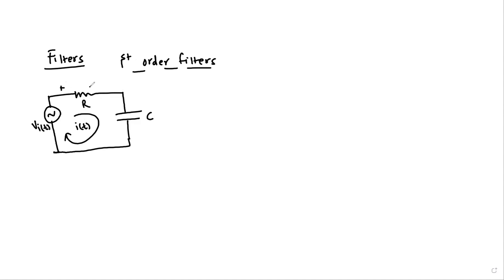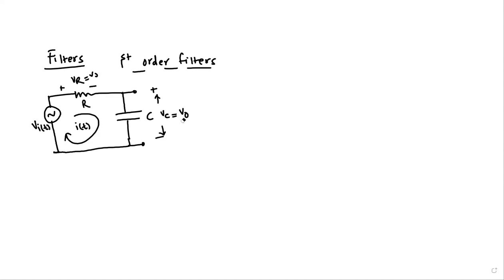The voltage that gets developed across the resistor is indicated by Vr. The voltage that gets developed across the capacitor is indicated by Vc, or the output voltage if we take the output across the capacitor. If we take the output voltage across the resistor, Vr will be Vout in that case. Right now, we are interested in measuring the voltage across the capacitor, so we will call it output voltage V0.